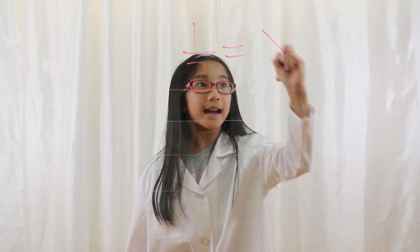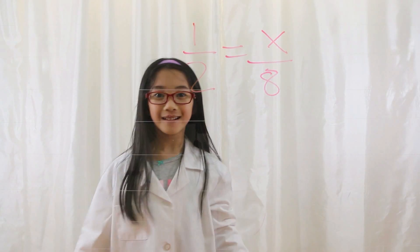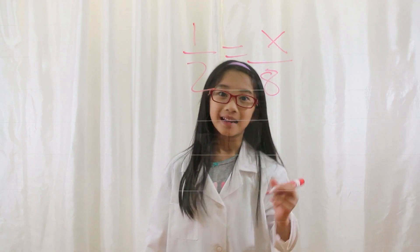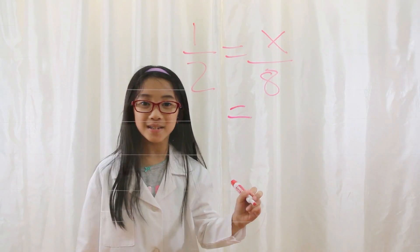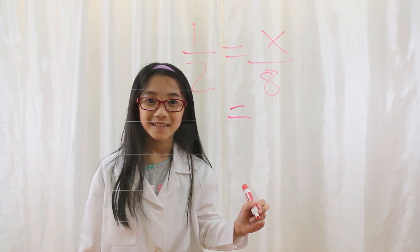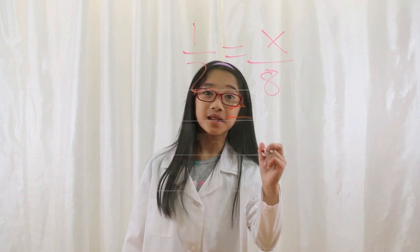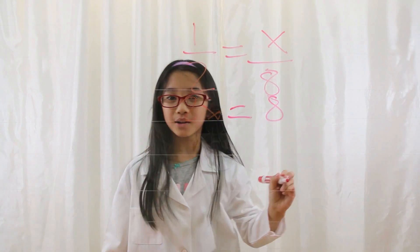Now it's your turn to do the work. Let's say you have 1 over 2 equals x over 8. What do you do first? If you said that you bring the equal sign down, you are correct. Now what is the first step? If you said that you cross multiply — 2x and 8 times 1 — you are correct.